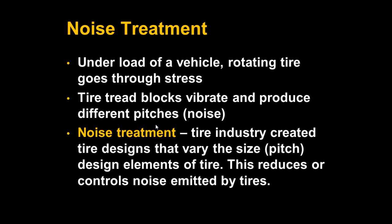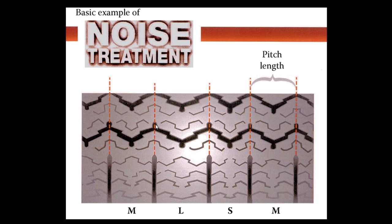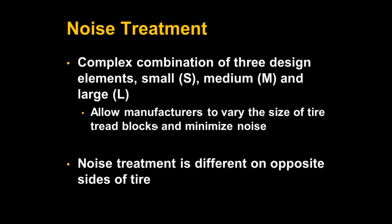The different sizes of tread blocks will create a variety of pitches, which will reduce noise. If a tire's tread blocks were all the same size, they would all produce the same pitch, creating a lot of noise. This image shows you how sections of tread, or tread blocks, come in different sizes — small, medium, and large — which are also called pitch lengths. As you can see, noise treatment designs can be complex, involving various combinations of differently sized tire tread blocks.